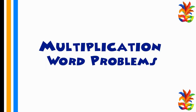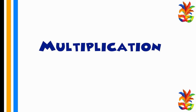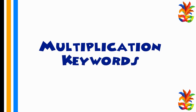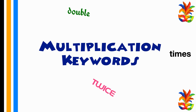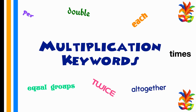Before we look at multiplication word problems, we need to look at those multiplication keywords — these are the words that signify multiplication: times, double, twice, equal groups, per, each, and all together. All of these and many more tell us that we have to multiply.